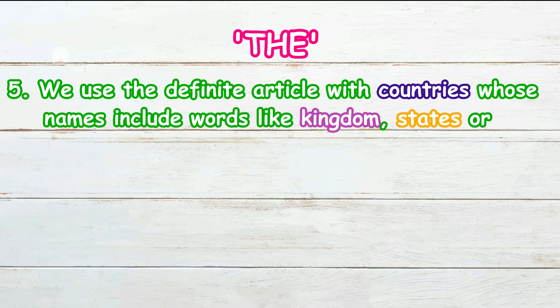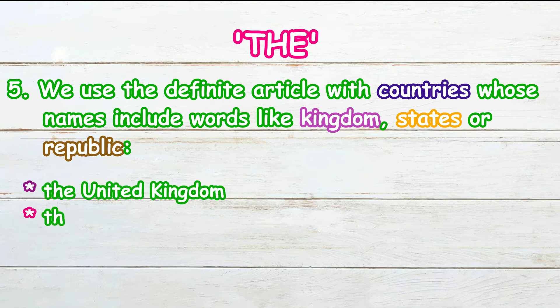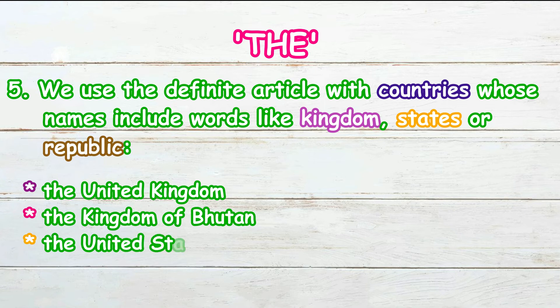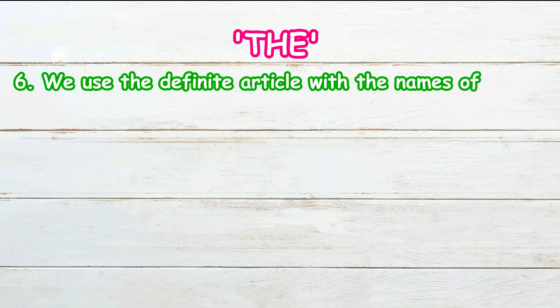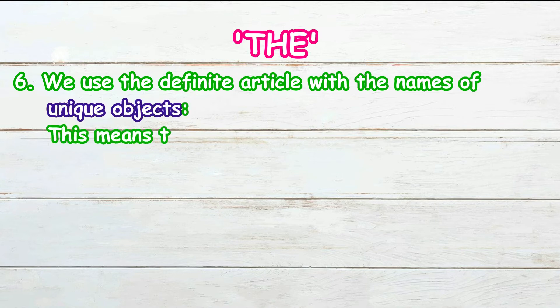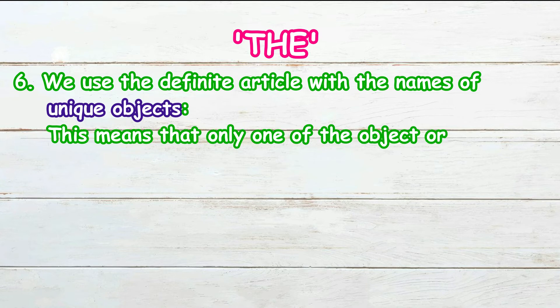We use the definite article with countries whose names include words like kingdom, states, or republic. For example: the United Kingdom, the Kingdom of Bhutan, the United States, or the People's Republic of China.